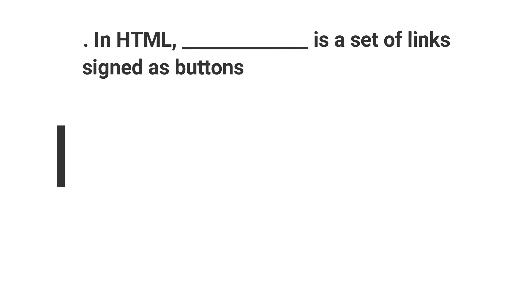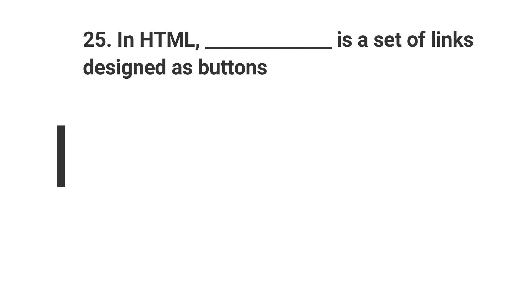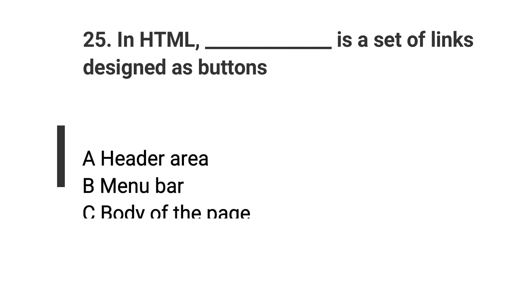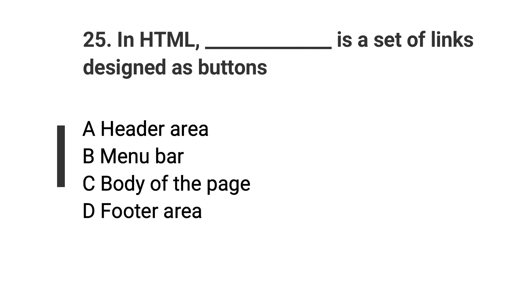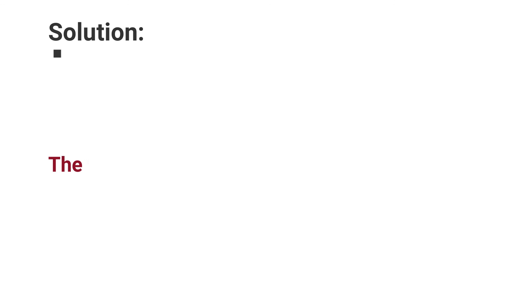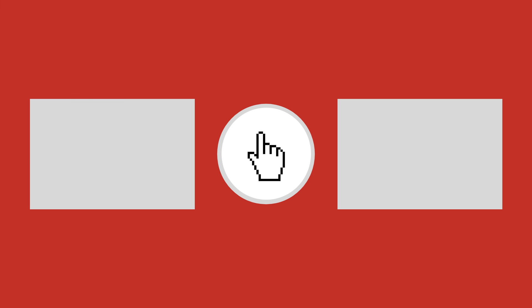Question number twenty-five: In HTML, dash is a set of links designed as buttons. Options are A. Header area, B. Menu bar, C. Body of the page, D. Footer area. The answer is option B, Menu bar. If you like the video, give it a thumbs up and subscribe to my channel.